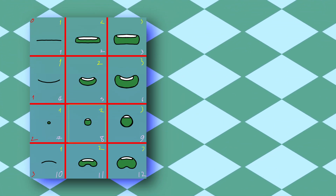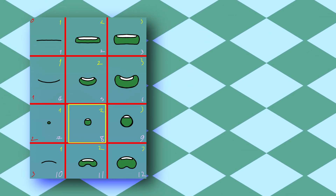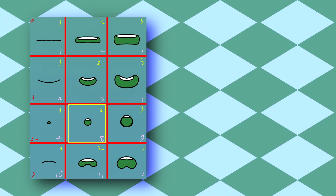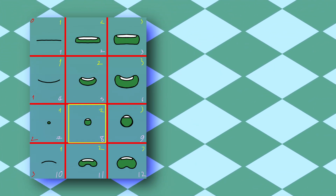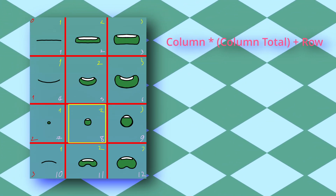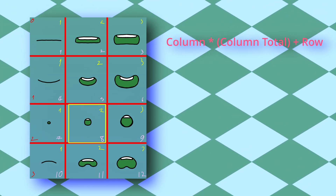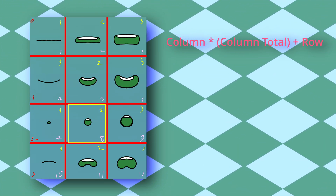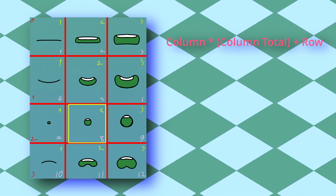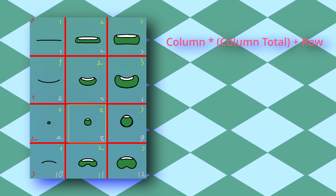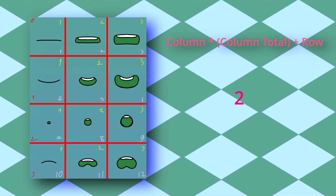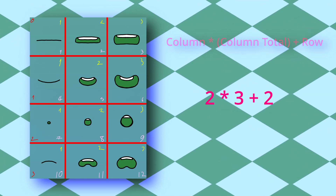So let's say that we want sprite number 8. It is on both column and row number 2. We will multiply the column number by the total number of columns and then add it to the row — so it'd be 2 times 3 plus 2.